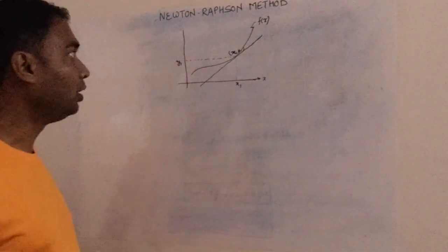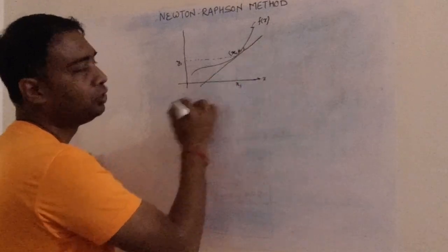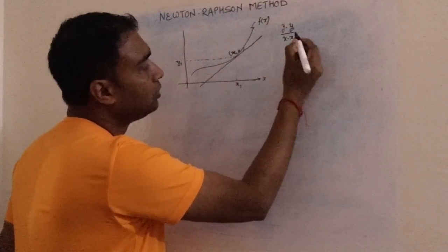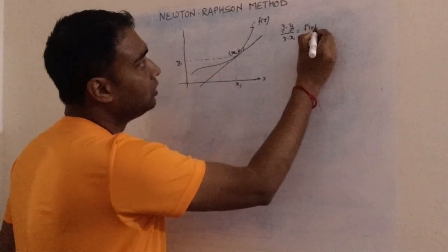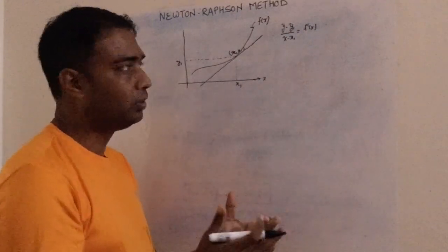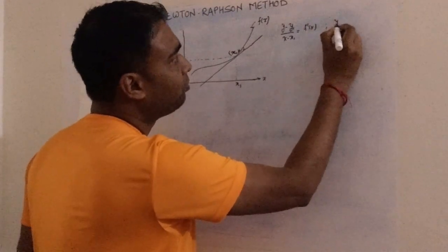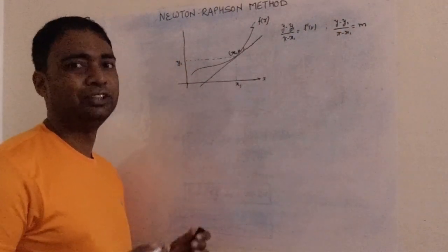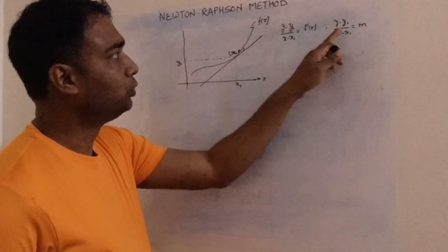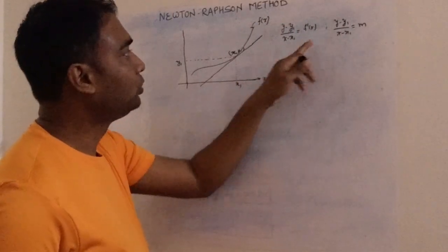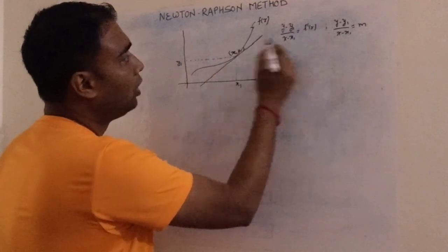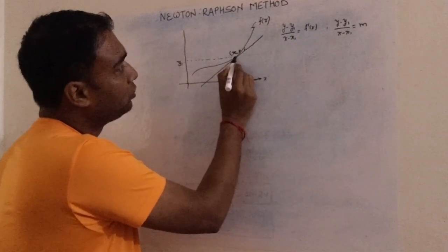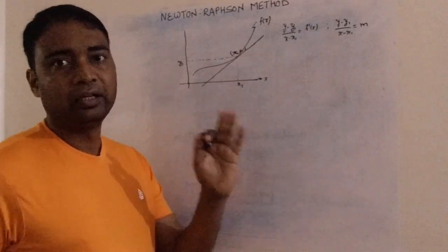Now I'll find the equation of this tangent line. If you have a point and you know the slope of a line, you can find its equation — this is basic coordinate geometry. The slope of the tangent at a point on the curve is found by taking the derivative f'(x1) of the function f(x).